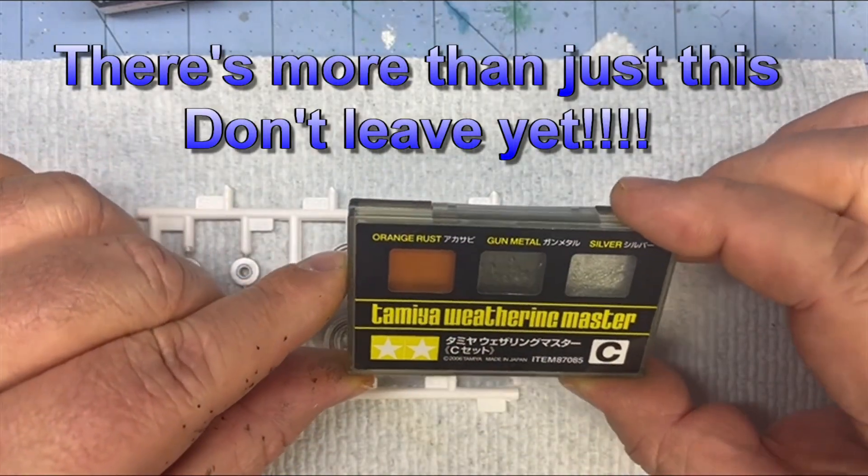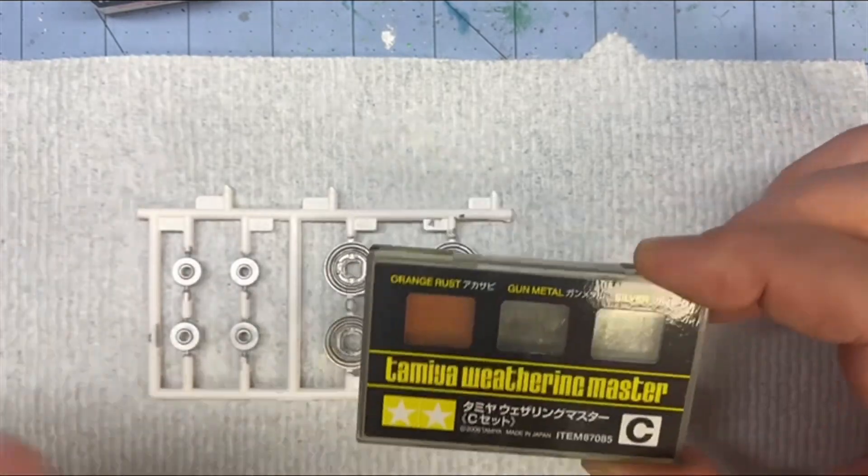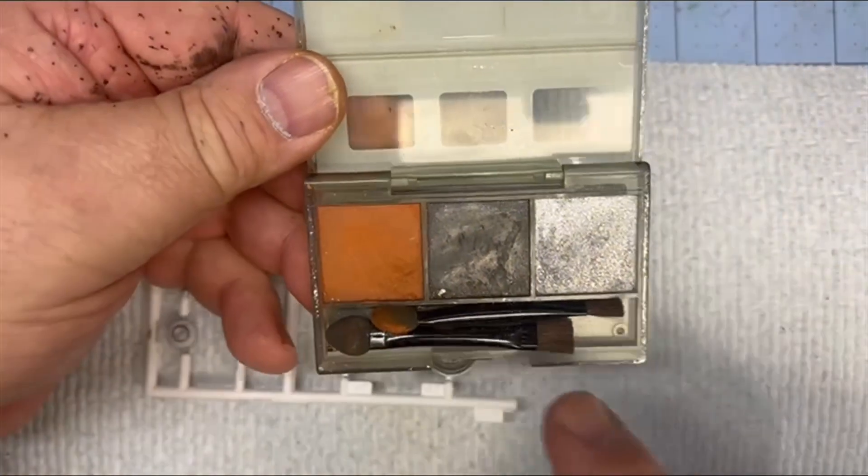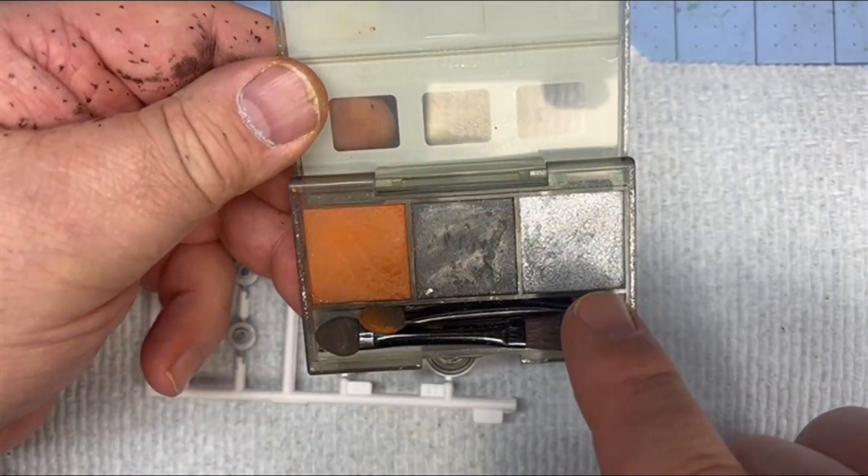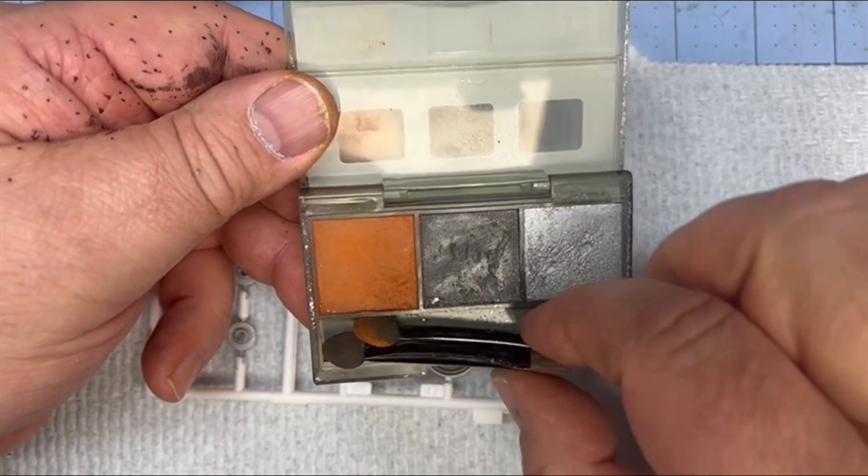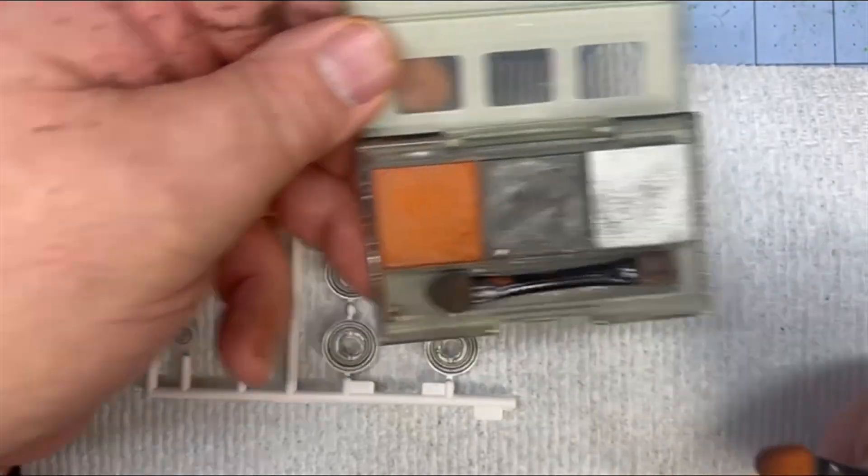And this is set C. And to be honest with you on cars and stuff, I pretty much only use two of them. You can tell I use the rust and I use the silver. I'll come back in sometimes with the gunmetal, but not a lot. But tonight we're just going to use the rust and the applicator that came with it.